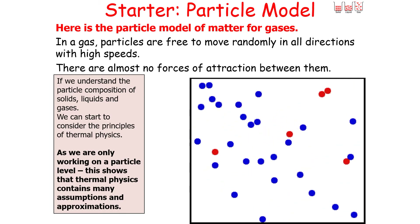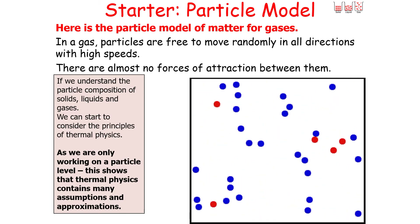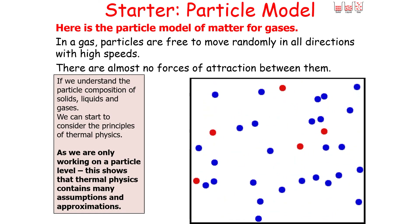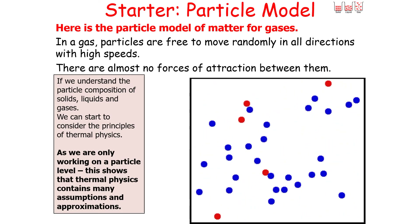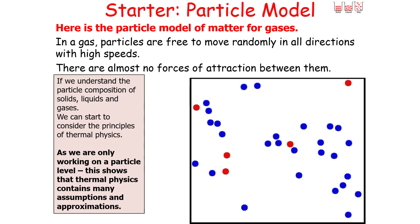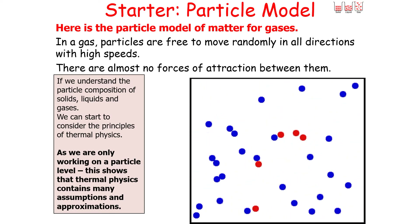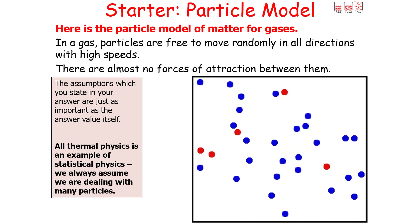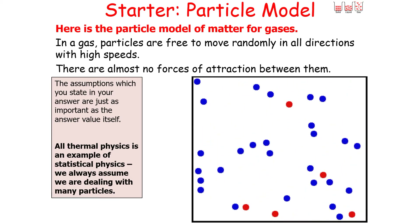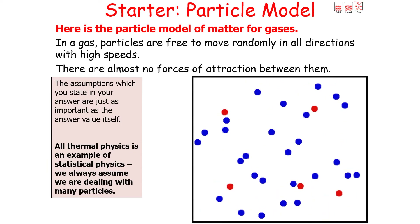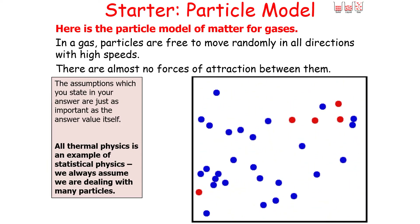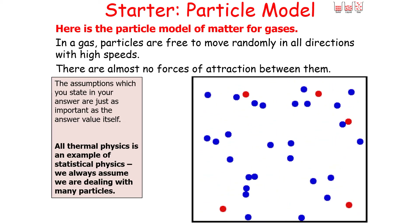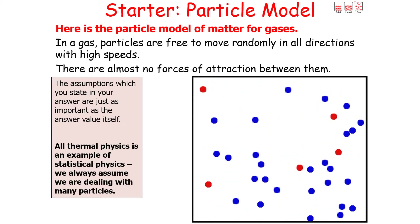As we're working on a particle level, thermal physics contains many assumptions and many approximations. We're not considering nuclei, protons, neutrons, or electrons — we're just considering particles as solid spheres. The assumptions you use in your calculations, which you state in your answer, are just as important as the answer value itself. All thermal physics is an example of what we call statistical physics, and we assume that we are dealing with many particles.